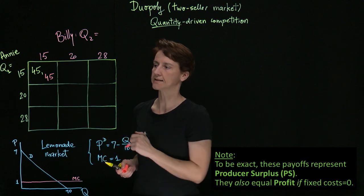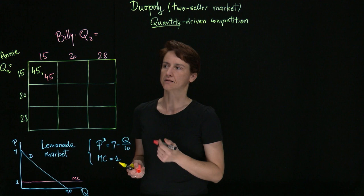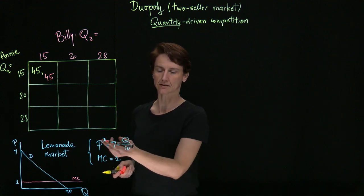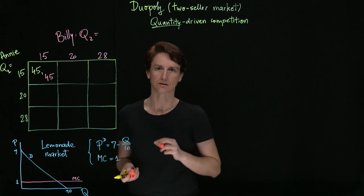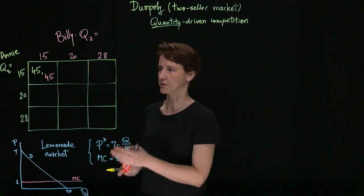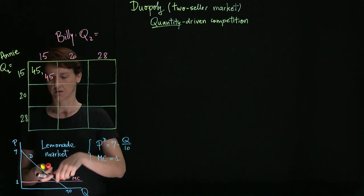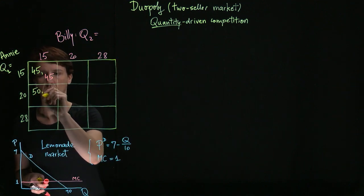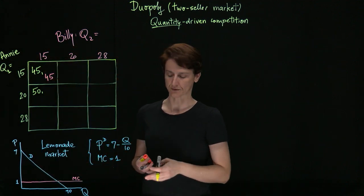If Annie makes 20 glasses and Billy makes 15, then they will make 35 total. That will mean that the price in the market is $3.50, so each of them has a margin of $2.50. That means Annie's profit will be 20 times $2.50, so $50. And Billy's will be 15 times $2.50, so $37.50.